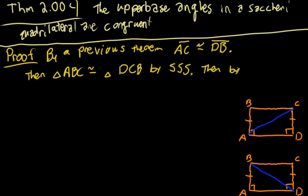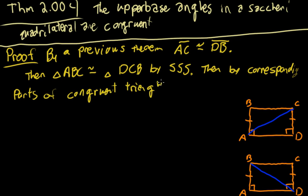Then by corresponding parts of congruent triangles, angle B is congruent to angle C.